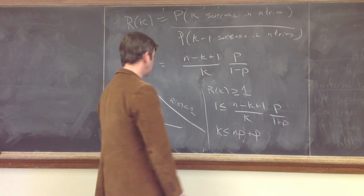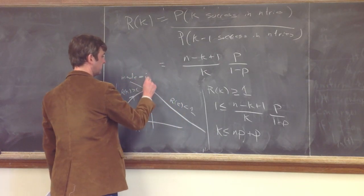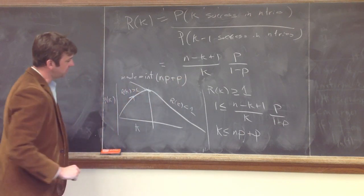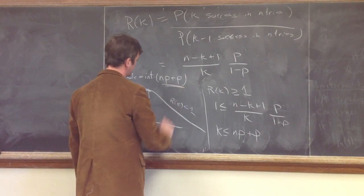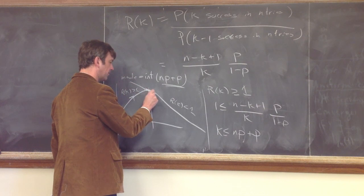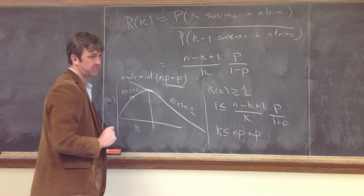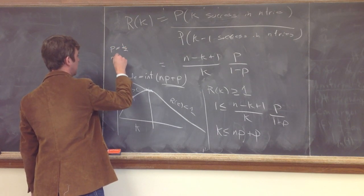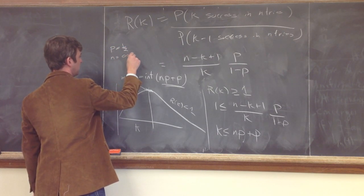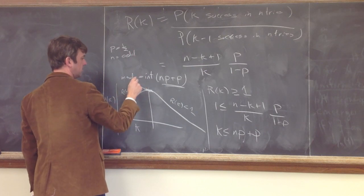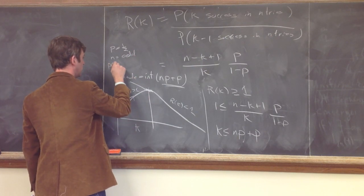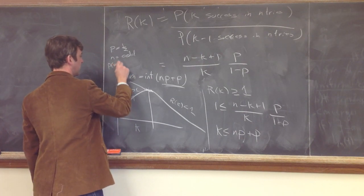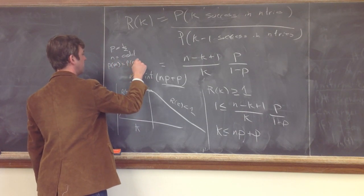Now since k has to be an integer, the mode is equal to the integer part of n p plus p. Now if it turns out that this is an integer, then there's actually two of them right next to each other which have the same value. So for instance, if p equals a half and n is odd, then the probability of the mode, if we call this m, this number.